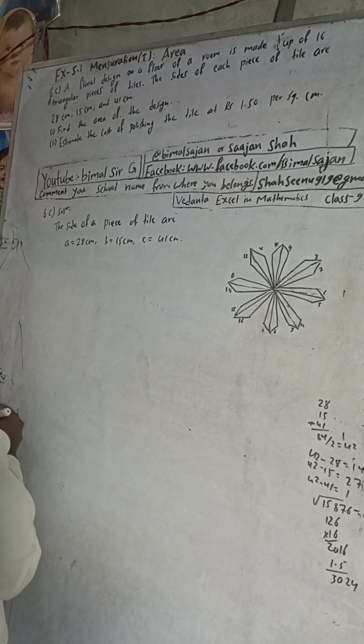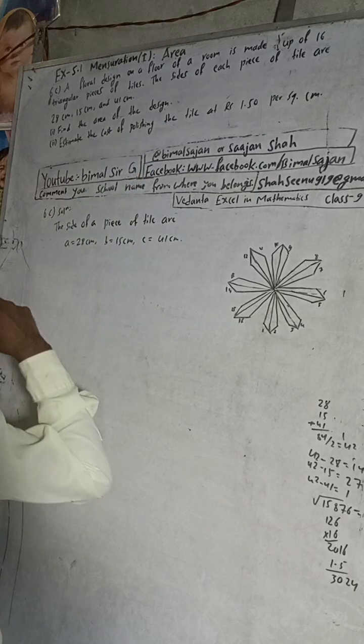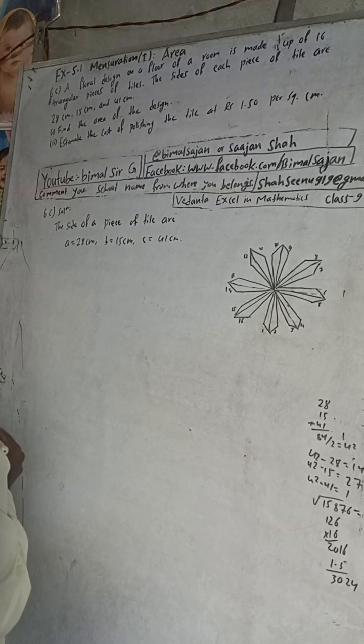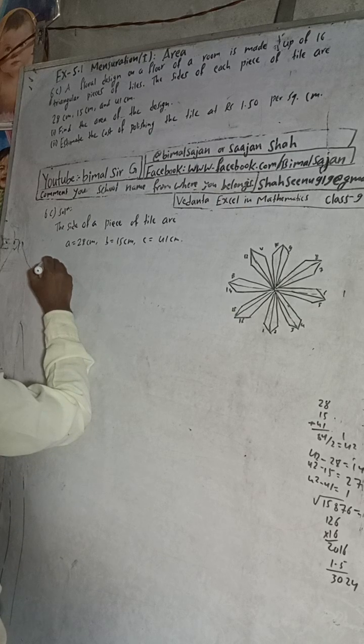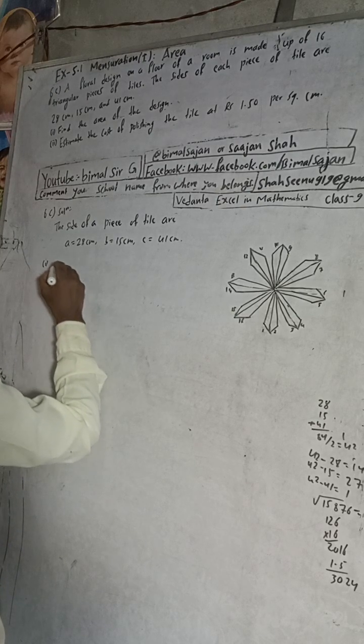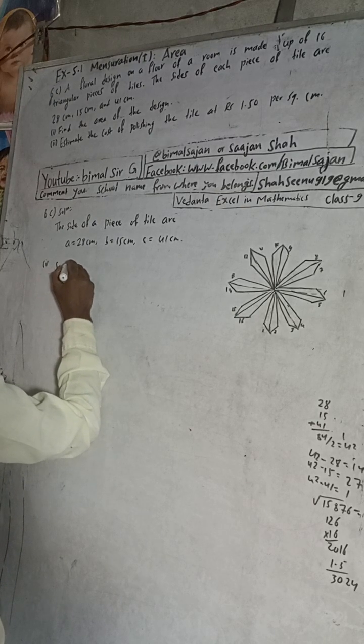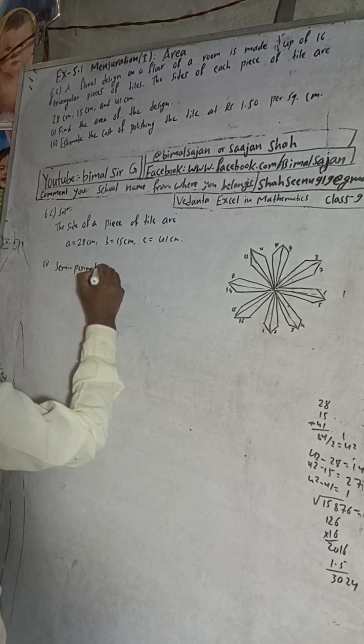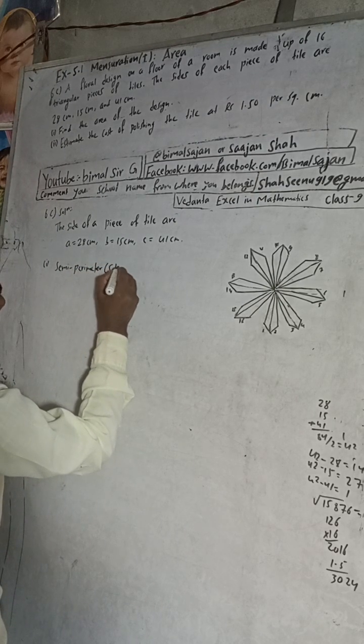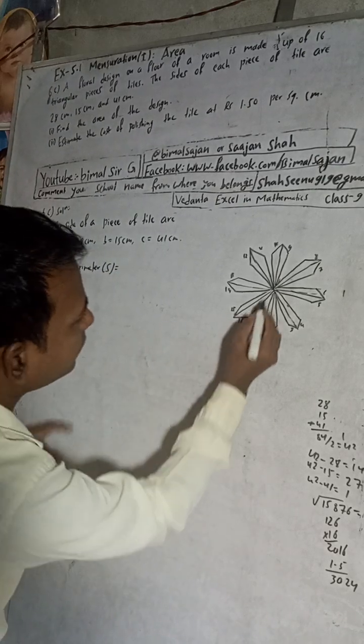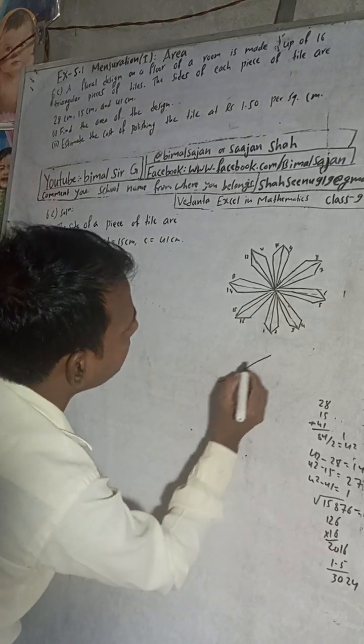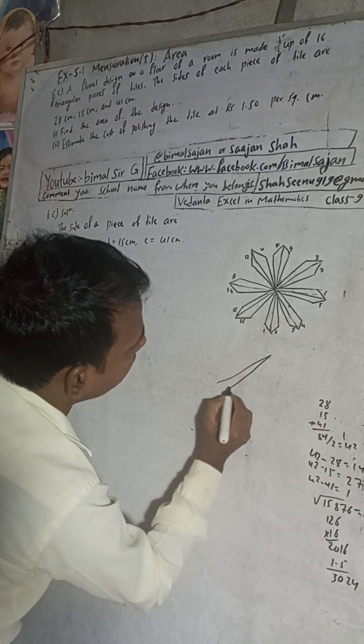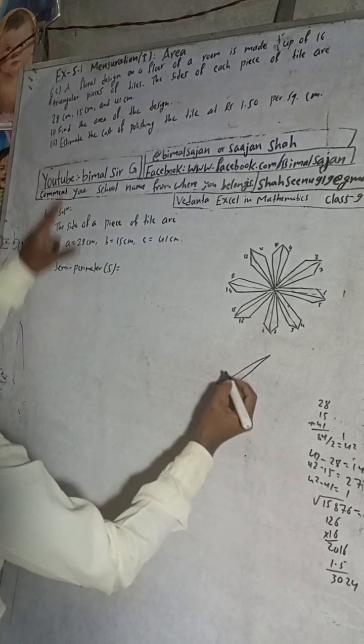Now find the area of the design. Now to find area of the design, first of all I will find semi-perimeter. Semi-perimeter, this is a triangle, one triangle. So 41, this one is 41, bigger one.